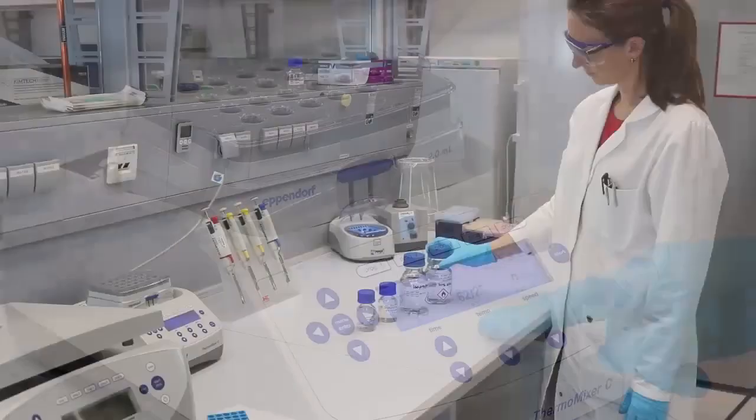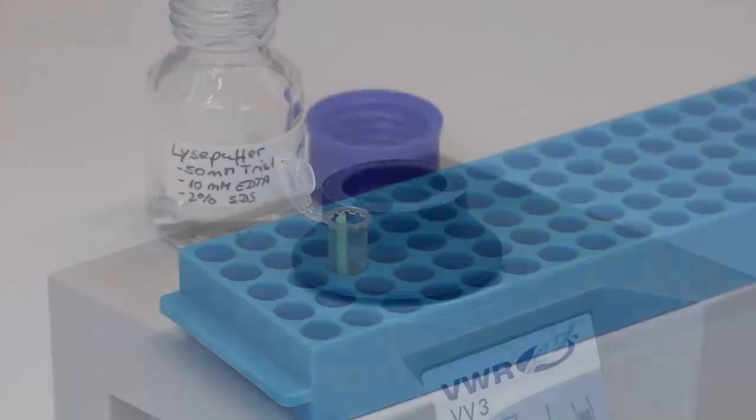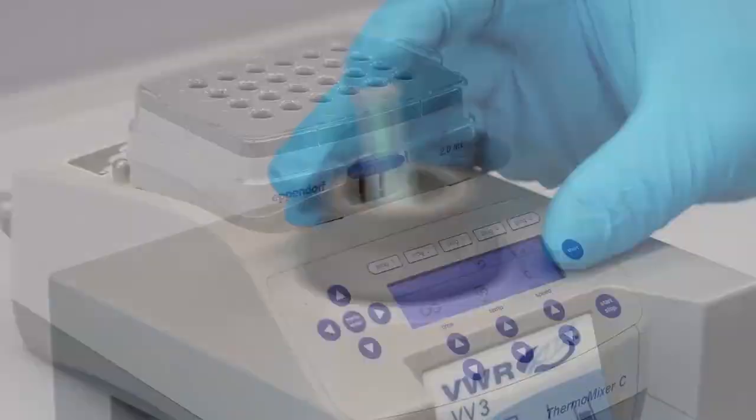Add 500 microliters of LISA solution to the swab, making sure that the sample is completely immersed in the LISA solution and vortex the sample for at least 5 seconds.